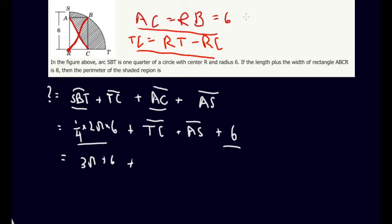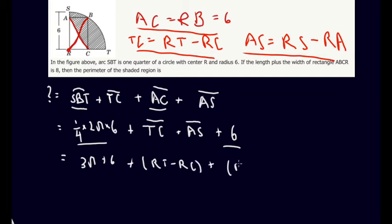And you can also note that AS, which is again another thing that we need in our final equation. We know that AS is equal to RS minus RA. Awesome. So we can plug these two things into our equation here. RT minus RC plus AS is RS minus RA.